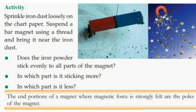Does the iron powder stick evenly to all parts of the magnet? In which part is it sticking more? Yes — that is the side endpoints. In which part is it less? The endpoints have more — then the portions of a magnet where magnetic force is strongly felt are the poles of the magnet.